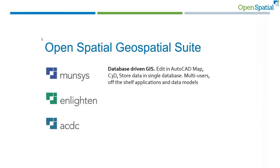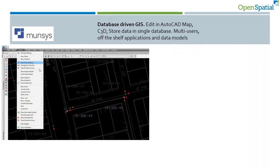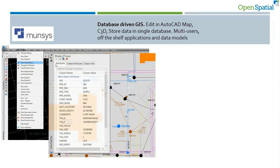With ManSys you can edit data in AutoCAD Map or Civil 3D and store it in a single database. It's multi-user with off-the-shelf applications and data models. Enlighten is our web-based geospatial portal and business intelligence integration platform. ACDC, or as-constructed design certification, is for the validation and loading of data from as-builts directly into your GIS. In ManSys, we build the full connectivity of all the data.